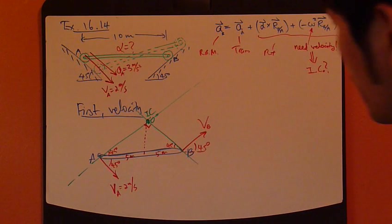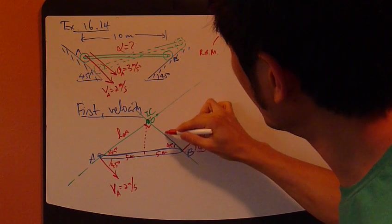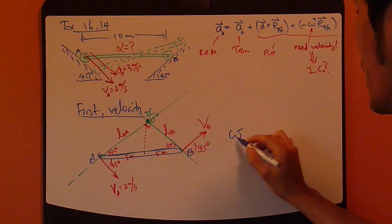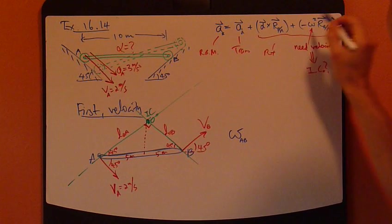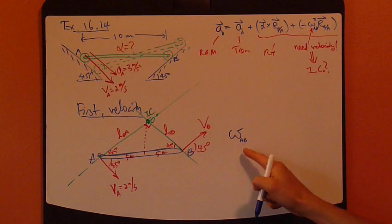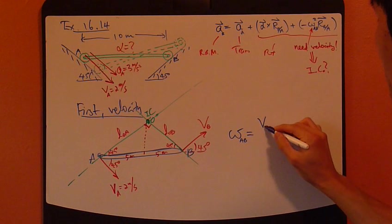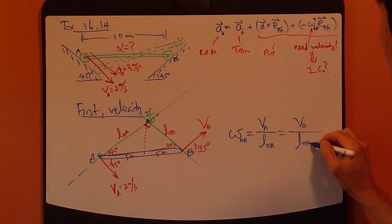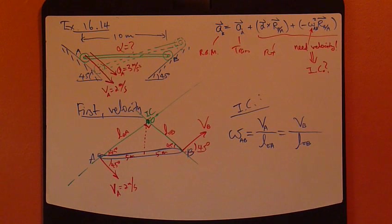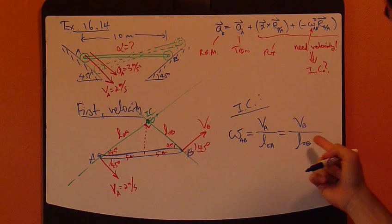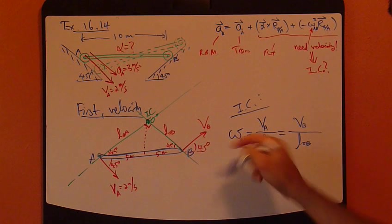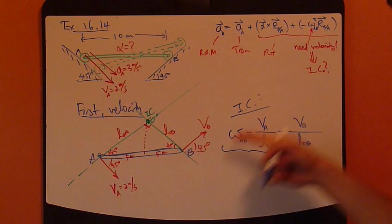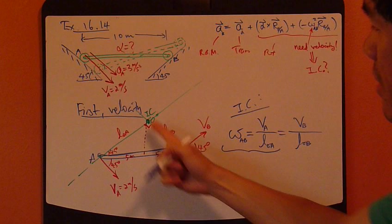So we need to find this length OA and length OB for the instantaneous center method. And the equation would be omega, omega of AB, which is required here. That's what we need up there. So this equals velocity of A divided by LOA, which also equals to VB, LOB. So this is instantaneous center method. So from this relationship, well, since this is the unknown, so I'm going to use these two guys right there. It's all for omega AB. So since I know the A, so all I need is just to find out what LOA is, the distance.